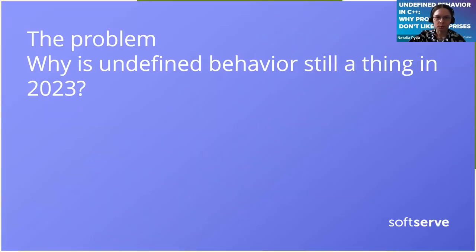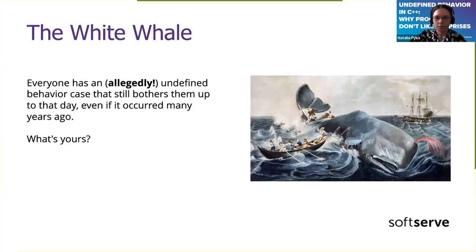Here's the problem connected with these questions. Why is undefined behavior still a thing this year? Why has it been around since the very beginning of C and C++, and not only these two languages? If you program long enough, especially in C and C++ — maybe not in Rust unless you write a lot of unsafe things — everyone has some really problematic case which happened to them at some point.